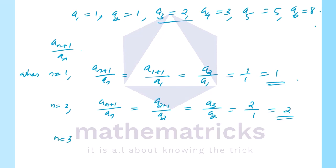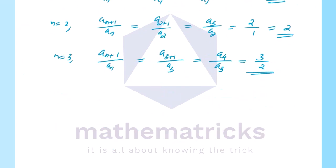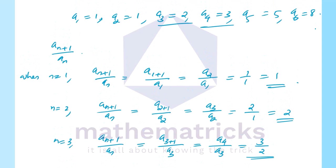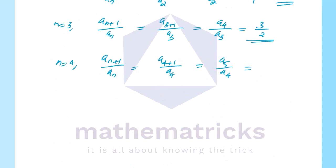For n equal to 3: a_{n+1} divided by a_n equals a4 divided by a3, that is 3 divided by 2. For n equal to 4: a_{n+1} divided by a_n equals a5 divided by a4, that is 5 divided by 3.